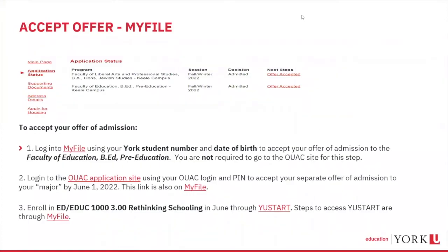To accept the pre-education offer of admission and your undergraduate program, log into My File and select Application Status. Here you will accept the Faculty of Education pre-education admission offer. Your second step is to accept the undergraduate program you've been admitted to on the Ontario Universities' Application Centre by logging in with your OUAC login and PIN number. The deadline to accept both the pre-education and the undergraduate program is June 1st.